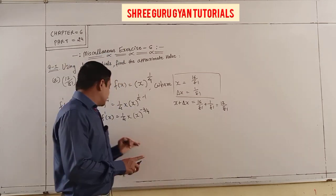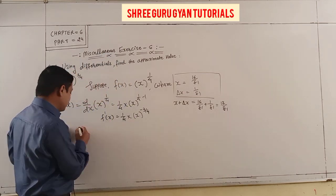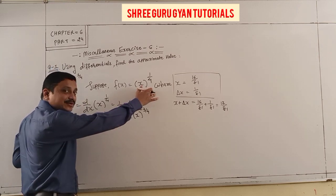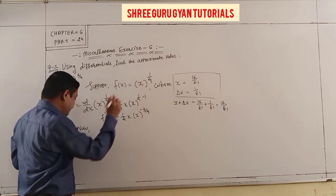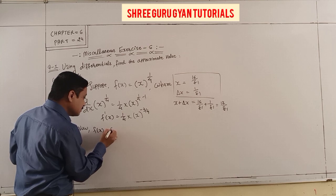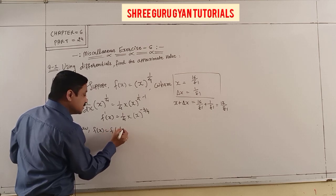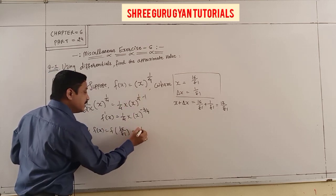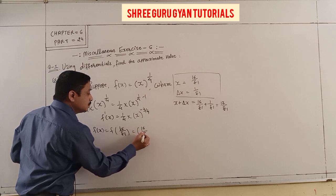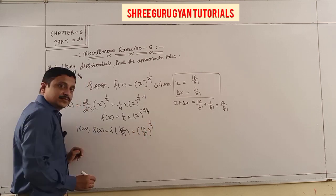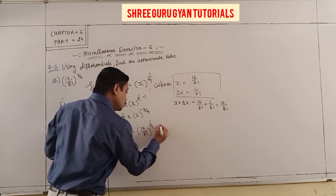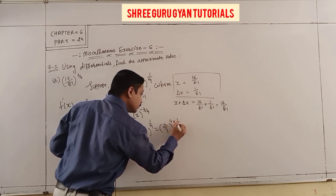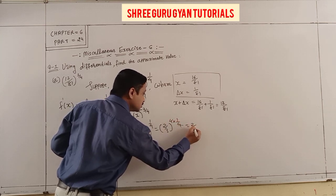So f'(x) = (1/4)·x^(-3/4). Now I find f(x) at x = 16/81: f(16/81) = (16/81)^(1/4) = (2/3)^4^(1/4) = 2/3.